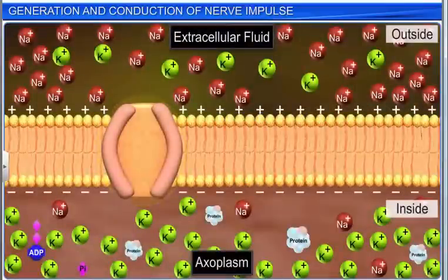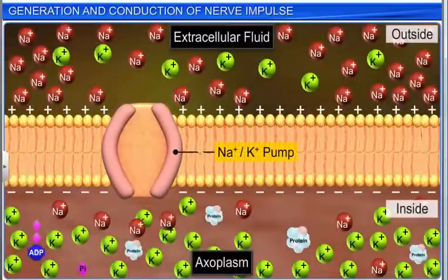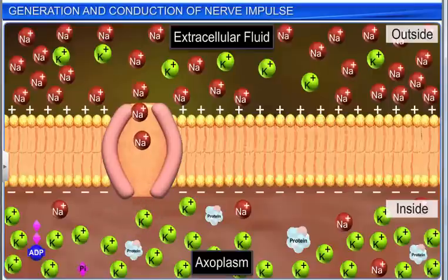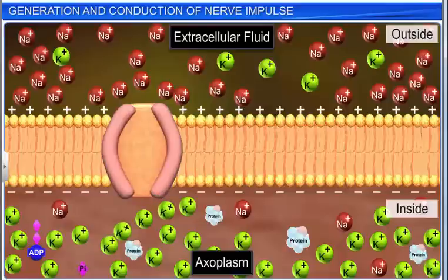This differential permeability is maintained by a sodium-potassium pump present inside the membrane. The sodium-potassium pump transports three sodium ions outside the cell for every two potassium ions that enter the cell.